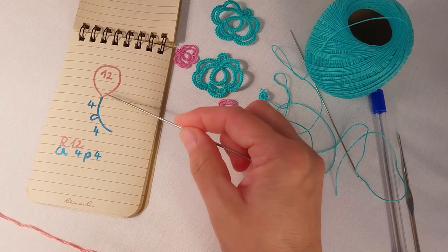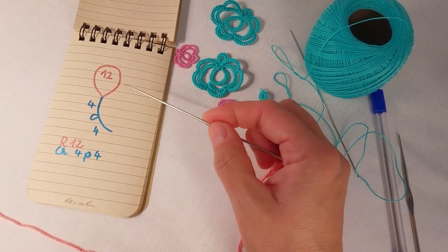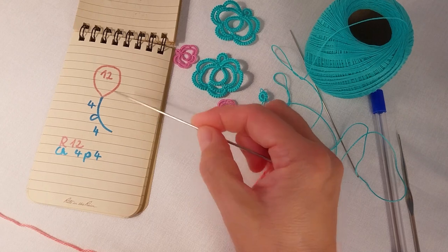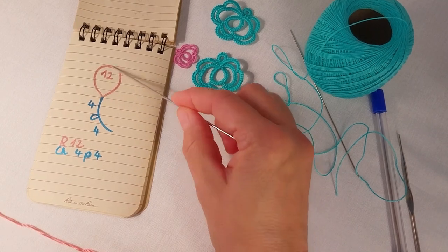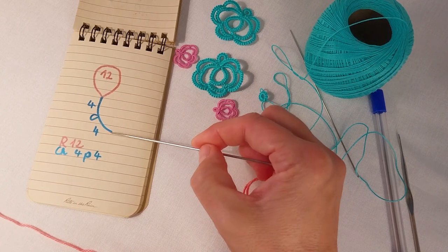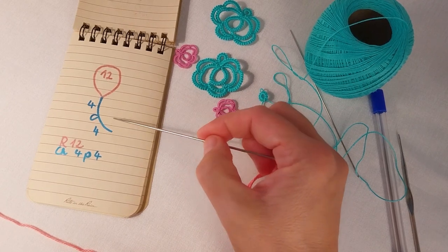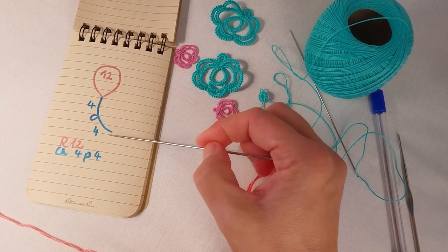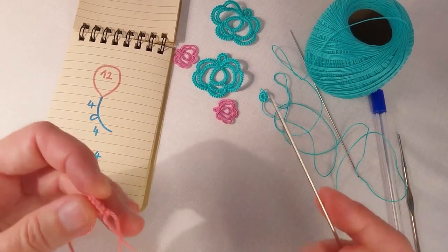So we are going to form these double stitches and the only difference is that this time we are not going to close like this. At this point we always close the ring, here we are not going to close. We are not going to pull through our needle in the hole, just leave it as it is.